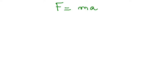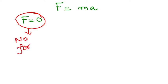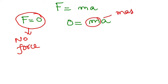Newton's Second Law states F = ma. Now let's say F = 0, which means there is no force. If I put F = 0, then ma = 0. Now, can the mass of an object be zero? No — mass cannot be zero. So if ma = 0 and mass is not zero, then ultimately acceleration must be equal to zero.